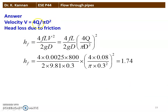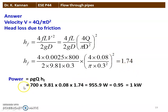Velocity V = 4Q/πD². Head loss due to friction HF = 4FLV²/2GD. Substituting: HF = [4 × 0.0025 × 800 / (2 × 9.81 × 0.3)] × [4 × 0.08 / (π × 0.3²)]² = 1.74 m. Power = ρgQ·HF = 700 × 9.81 × 0.08 × 1.74 = 955.9 W ≈ 0.95 kW ≈ 1 kilowatt. That is the answer.